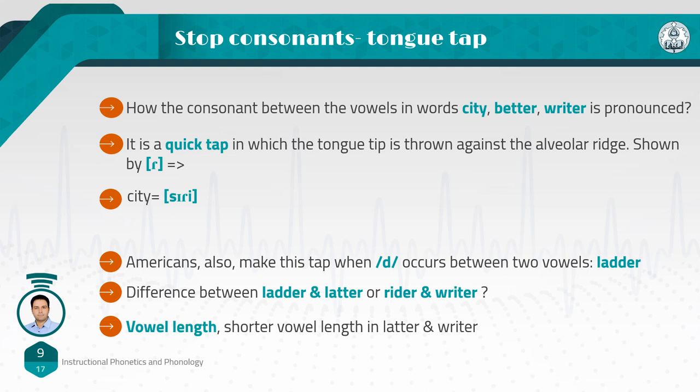Some dialects of North American English, particularly from Central Canada, also distinguish between word pairs like writer and rider — both said with a tap — by having an additional vowel quality difference that is redundant with the vowel length difference found in other dialects. So Canadians pronounce it like 'rider' and 'raider.'